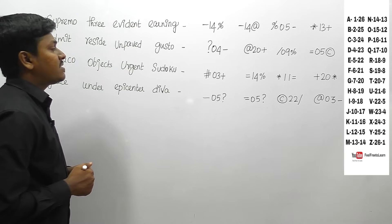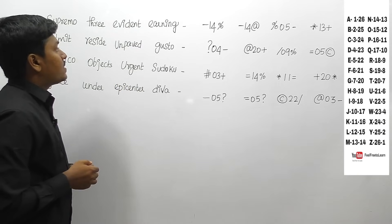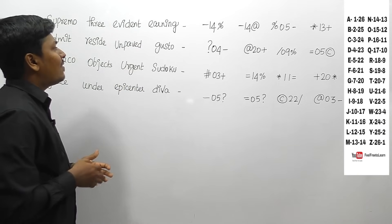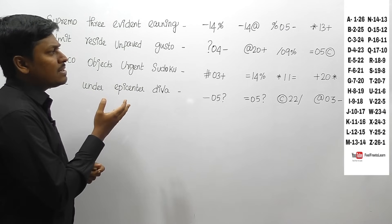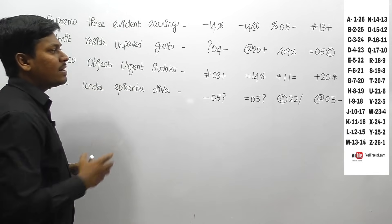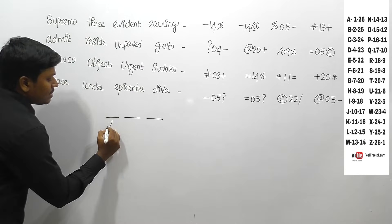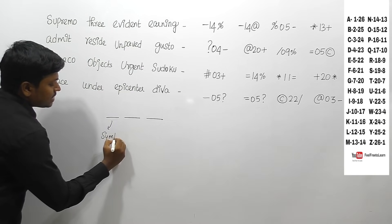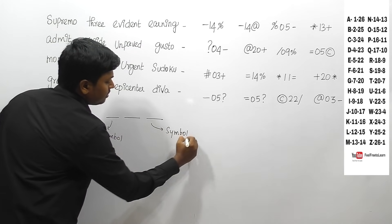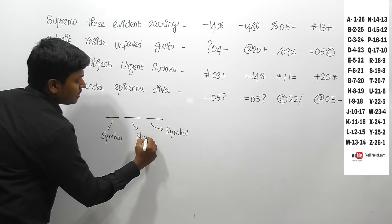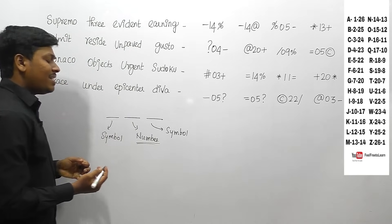Let me move on to the first equation on the new pattern of coding and decoding. First, have a glance at the question — words are coded by different symbols and also by different numbers. Each word is coded in three different ways: initially it starts with a symbol, ends with a symbol, and at the center they are using numbers.